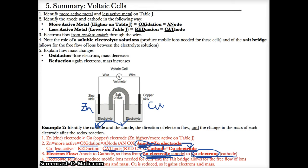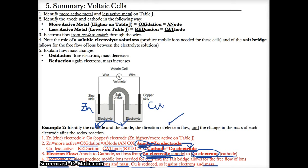In terms of change in mass: since Zn is oxidized, it loses electrons based on oil rig, and therefore loses mass. Cu, on the other hand, is reduced and gains electrons based on oil rig, so it gains mass because gaining particles makes something heavier. Electrolyte solutions produce free mobile ions, allowing electricity to be conducted.